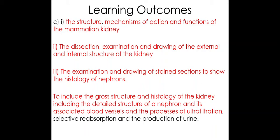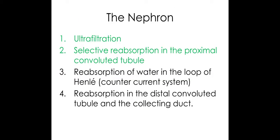Welcome to part three of specification point C, where we're going to be looking at selective reabsorption. In part one we looked at the structure of the kidney, in part two we looked at ultrafiltration, which occurred across the glomerulus into the Bowman's capsule. In the glomerular filtrate we had water, salts such as potassium and sodium, urea, glucose, and amino acids being removed from the blood.